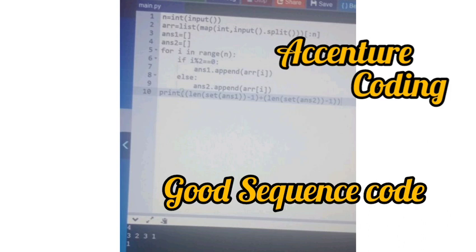After that, you have to use a for loop: for i in range(n), then if i % 2 == 0, then append it into ans1, else append into ans2.